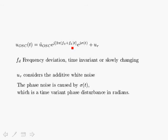There is a frequency deviation FD which is time invariant — or slowly changing, so we consider it to be a constant — representing the deviation with respect to the actual center frequency of the oscillator. We have the term e to the j-sigma of T, which is the phase noise. And we have a term which is additive Gaussian noise, U sub R. So we basically have a frequency deviation plus a phase noise, and we're breaking out the phase noise in terms of this exponential.